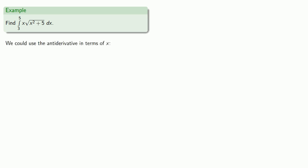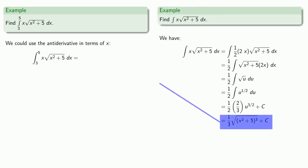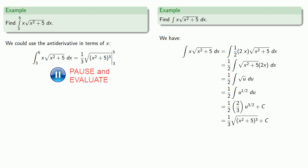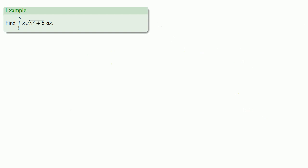On the one hand, I can use the anti-derivative I found, and so I'm going to evaluate this function at 5 and subtract this function evaluated at 3, which gives me the value of the definite integral. We can try a different approach.